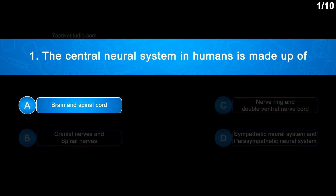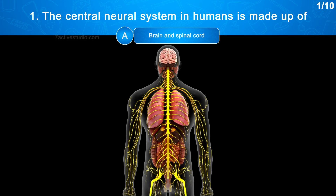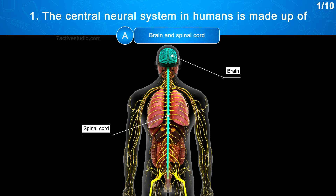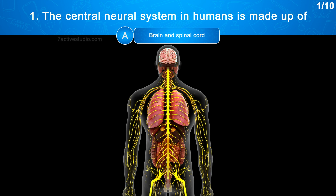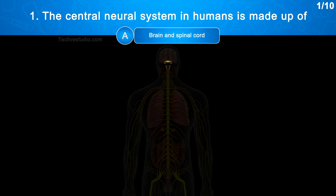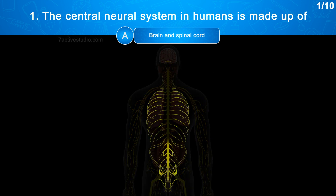The correct answer is Option A: Brain and spinal cord. The brain and spinal cord form the central nervous system. The peripheral nervous system includes the cranial and spinal nerves.